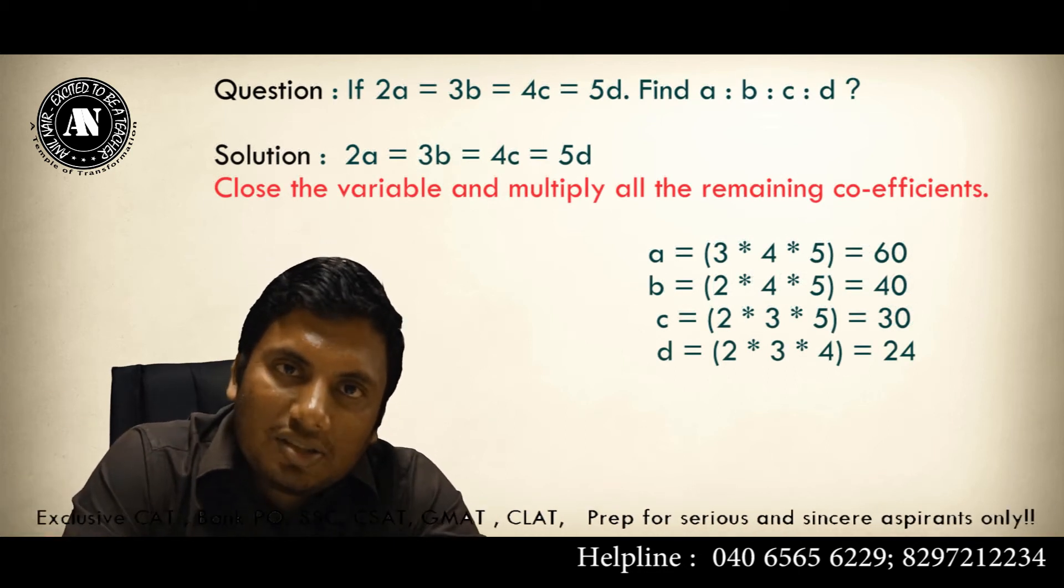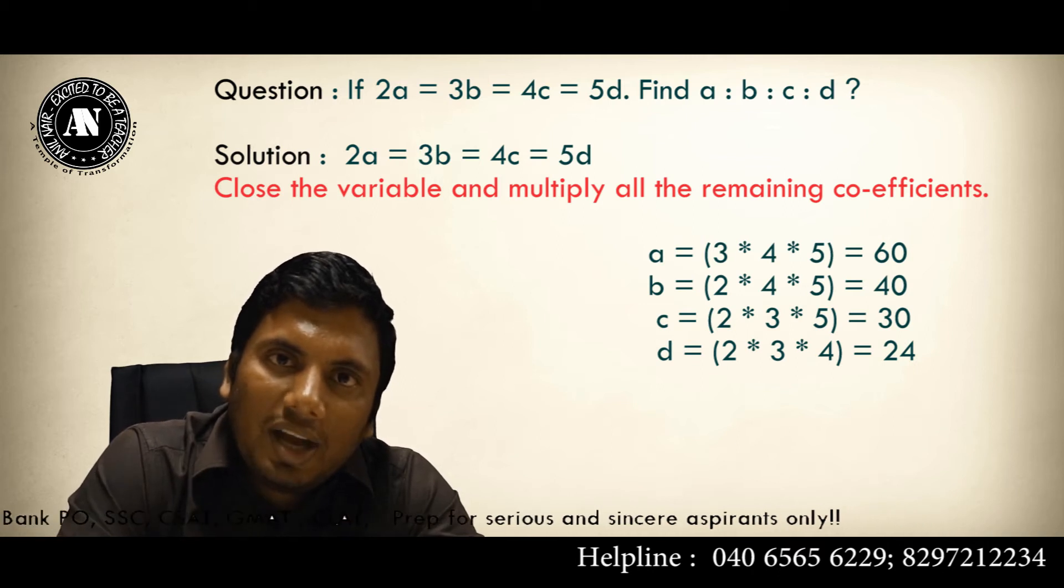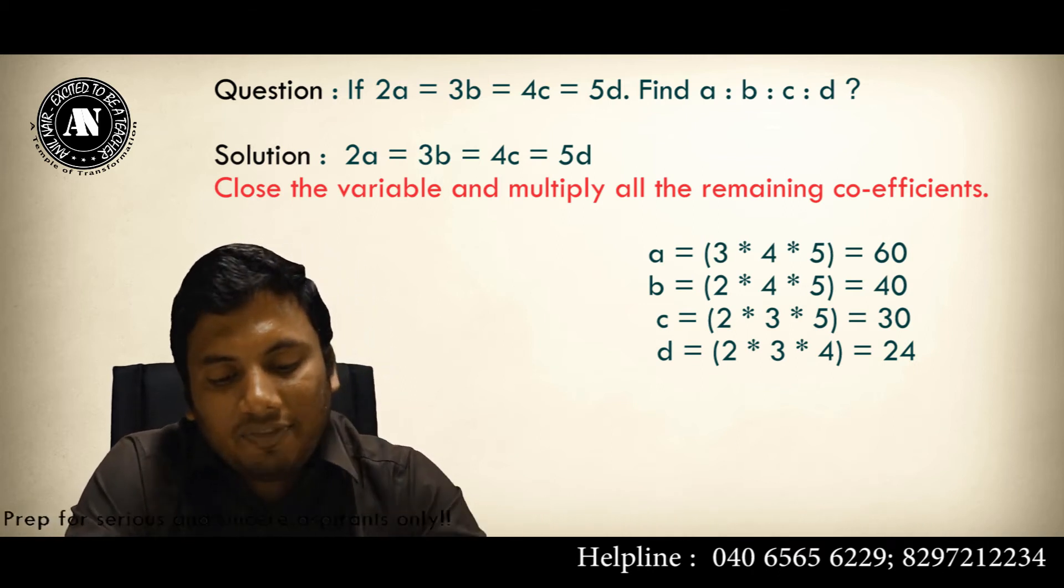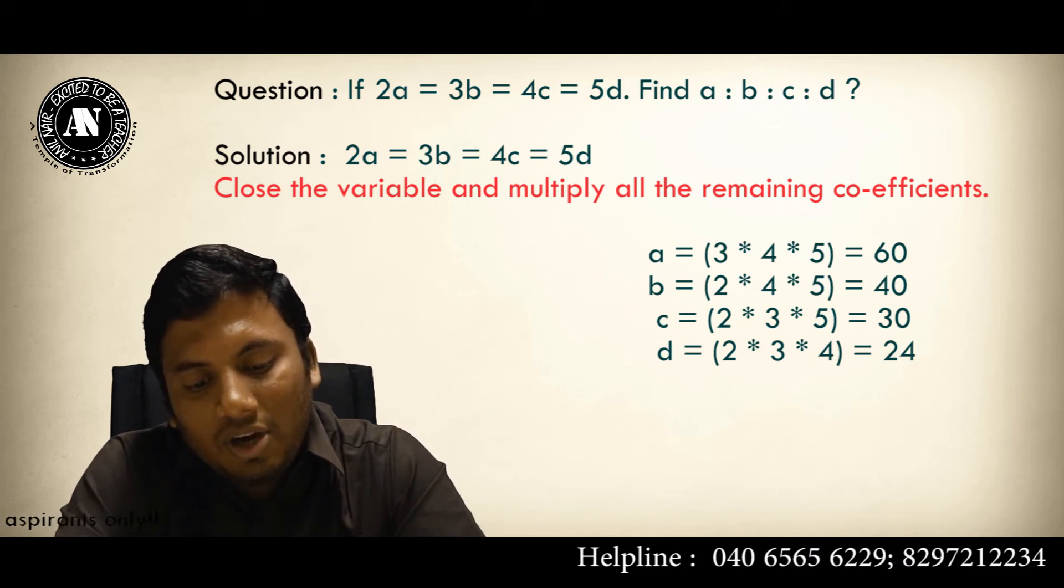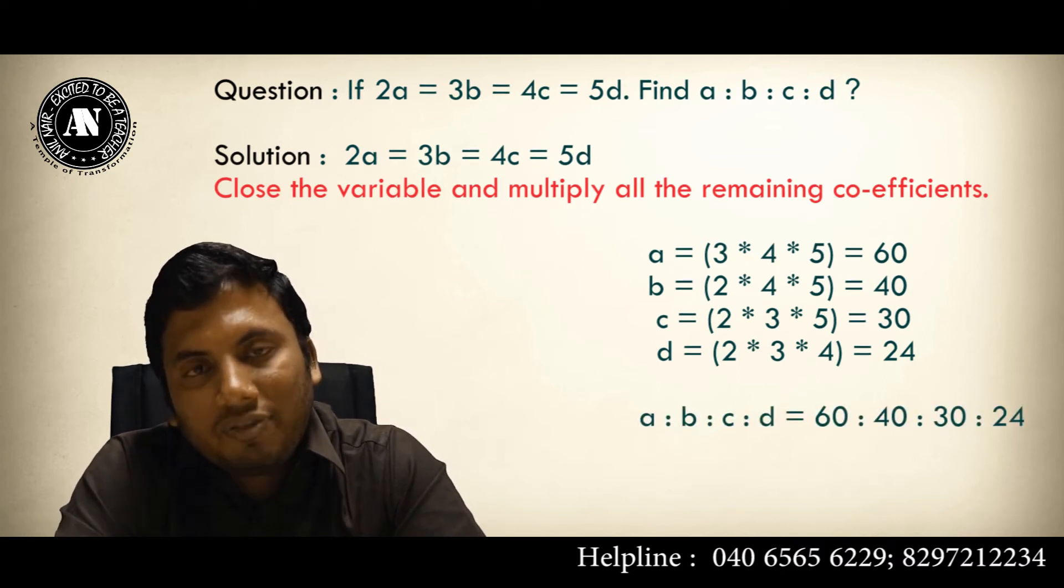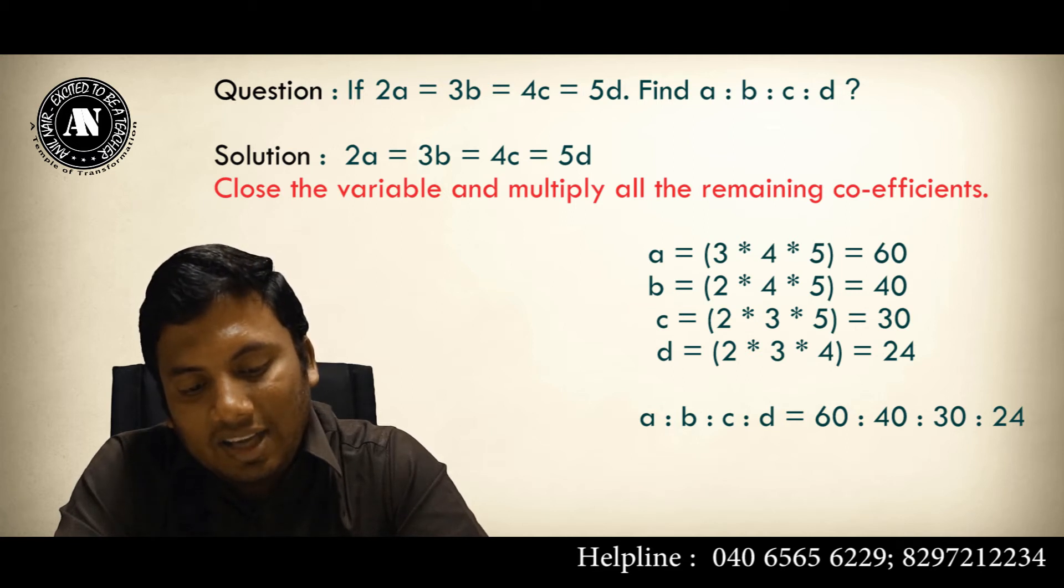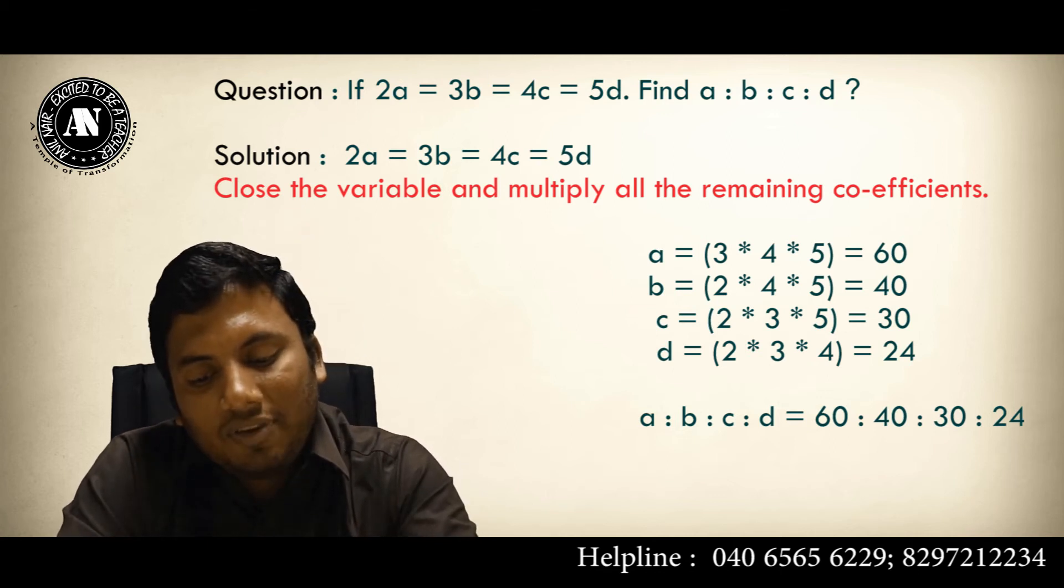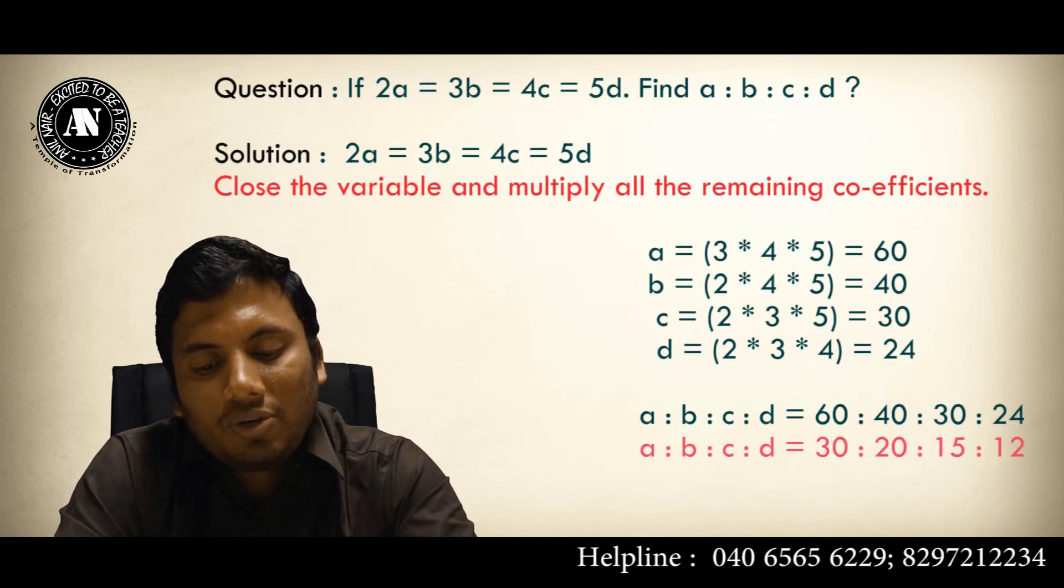To get a variable of this format, close that variable and multiply all the remaining coefficients. So what will be the answer for A is to B is to C is to D? A, we got 60. B, we will get 40. C, we will get 30. D, we will get 24. If you want to simplify further, please simplify. So 60, 40, 30, 24 can be simplified into 30 is to 20 is to 15 is to 12.